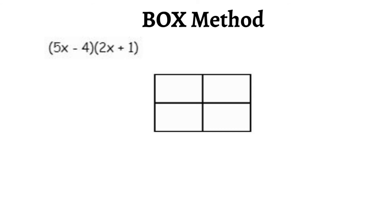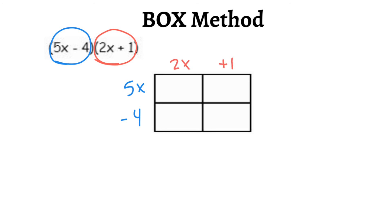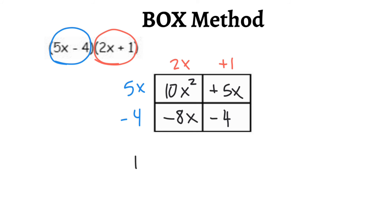Same problem — 5x minus 4 times 2x plus 1 — using box method. I have 5x and negative 4 on one side, and 2x and positive 1 on the other. I multiply: 5 times 2 is 10 and x times x is x squared, so 10x squared. 5x times 1 gives positive 5x. Negative 4 times 2x gives negative 8x. And negative 4 times 1 gives negative 4. Combining like terms: 10x squared, and negative 8x plus positive 5x gives negative 3x, minus 4. If you're multiplying the terms correctly, at the end it's just about adding the coefficients.